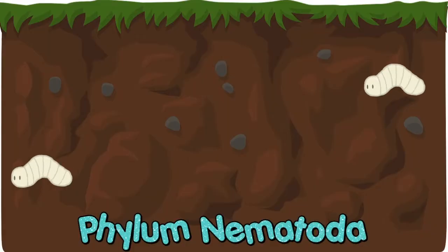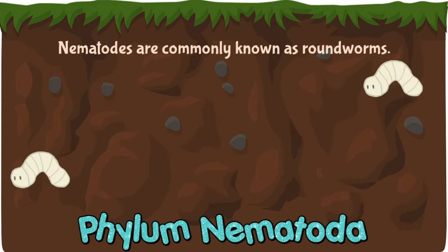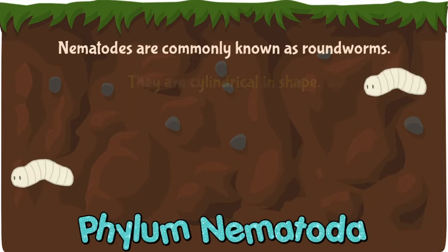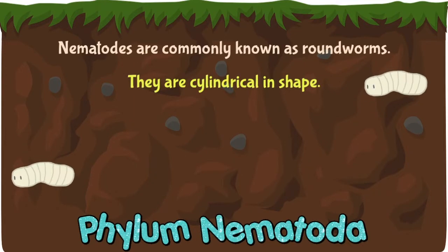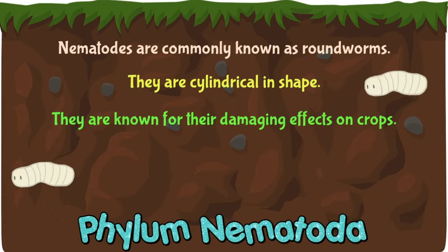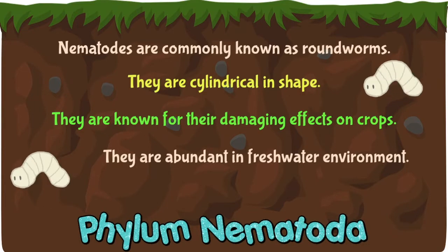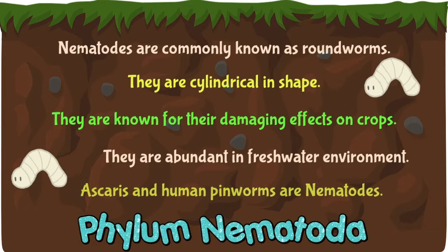Next on the list is phylum Nematoda. Nematodes are among the most abundant animals on earth, commonly known as roundworms. They are cylindrical in shape. Nematodes are best known for their damaging effects on crops, and they are also abundant in freshwater environments. Ascaris and human pinworms are some examples.